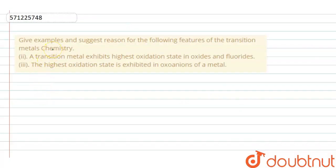Give examples and suggest reasons for the following features of transition metals chemistry. A transition metal exhibits highest oxidation state in oxides and fluorides. And two, the highest oxidation state is exhibited in oxoanions of a metal.